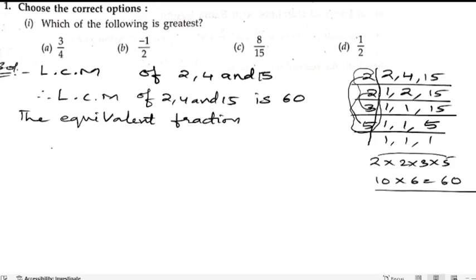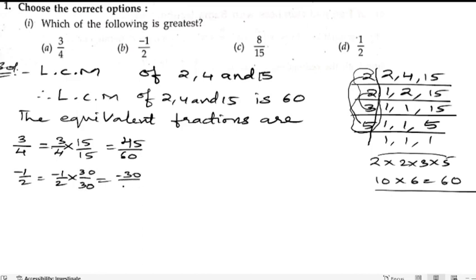The equivalent fractions are: the first number is 3/4, so we need to multiply 3/4. 4 should become 60, so to make it 60 we need to multiply with 15. So 3 times 15 are 45 by 15 times 4 are 60. Next is -1/2. -1/2, so 2 needs to be multiplied with 30 to make 60. So -30 by 2 times 30 are 60.